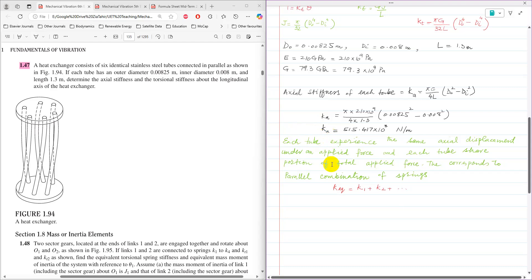Total axial stiffness of all tubes will be 6 times the axial stiffness of each tube. Total axial stiffness by multiplying K_A with 6 comes as 3.0925 into 10 to raise power 6 Newton per meter.